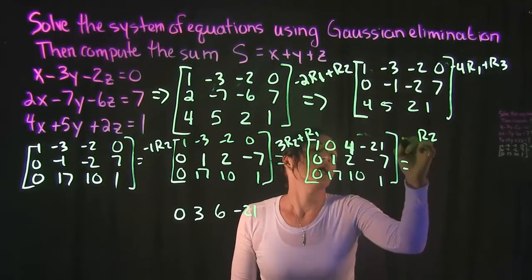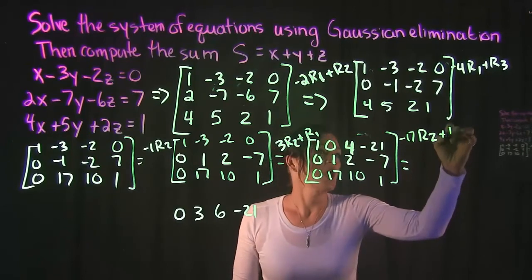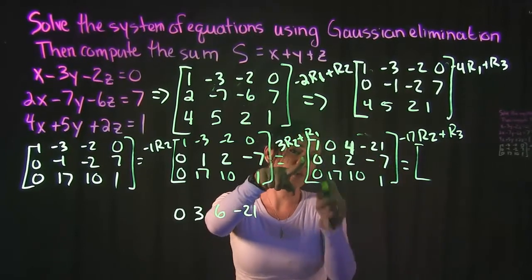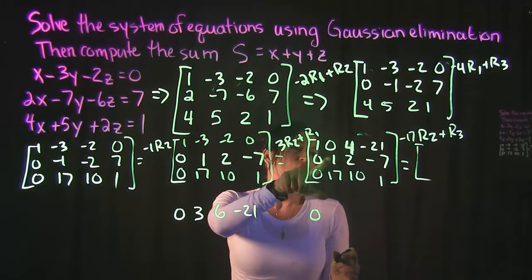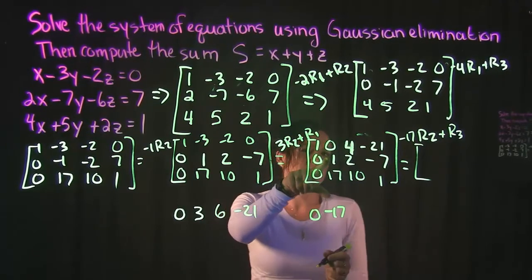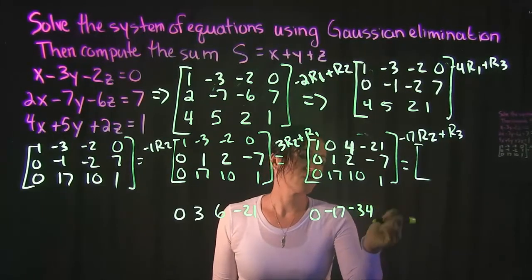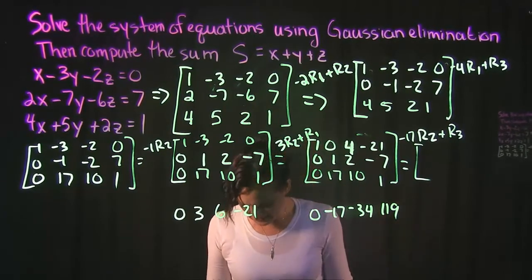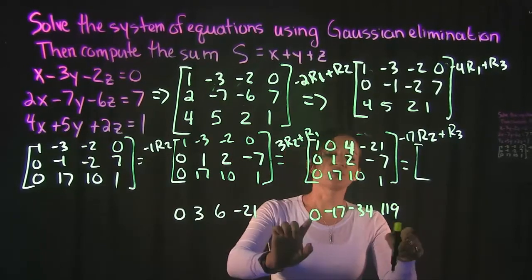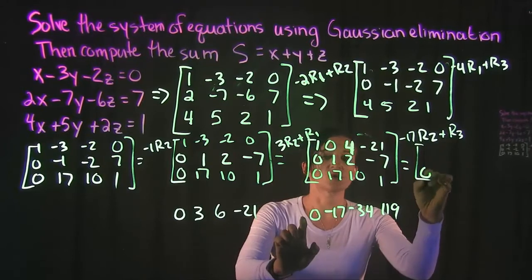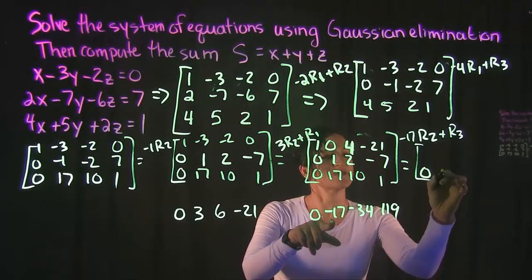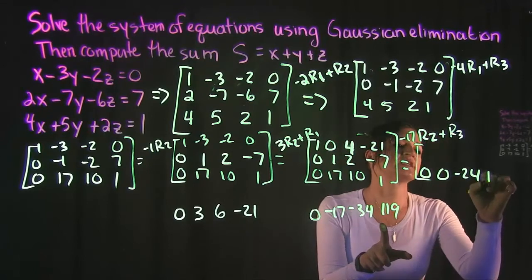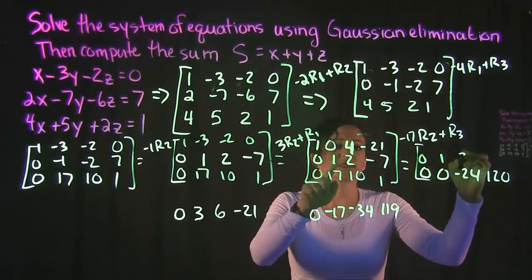Next step: take row 2, multiply it by negative 17, and add that to row 3. Row 2 times -17: 0 times -17 is 0, 1 times -17 is -17, 2 times -17 is -34, and -7 times -17 is 119. Adding to row 3: 0 plus 0 is 0, 17 plus -17 is 0, 10 plus -34 is -24, and 1 plus 119 is 120.